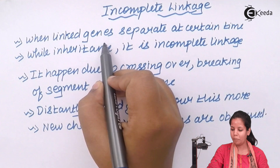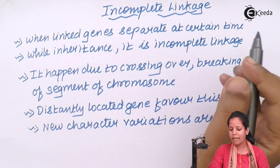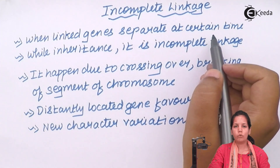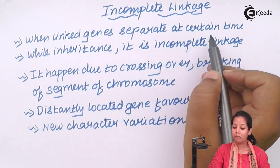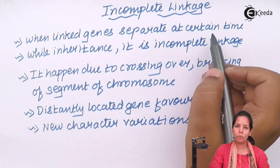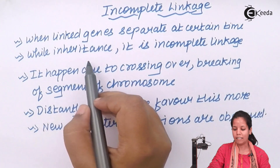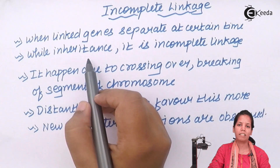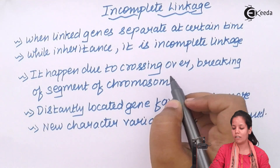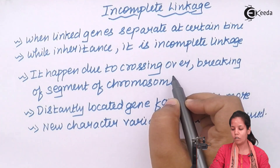These linked genes which separate at certain times try to separate at two different places. When they separate at two different chromosomal regions, there is a difference in inheritance or a difference in characteristics, and this happens especially at the crossing over of chromosomes.